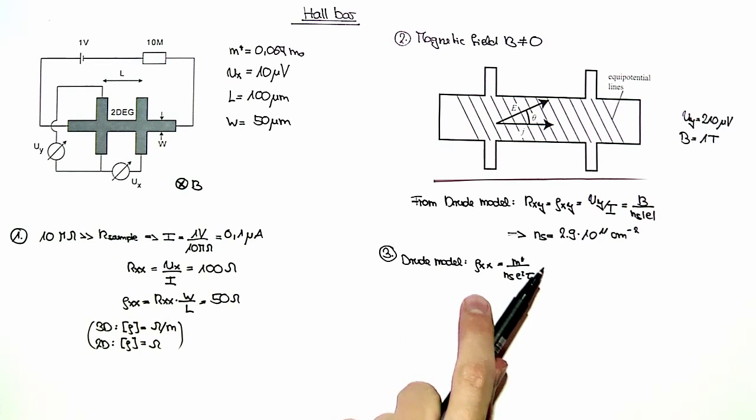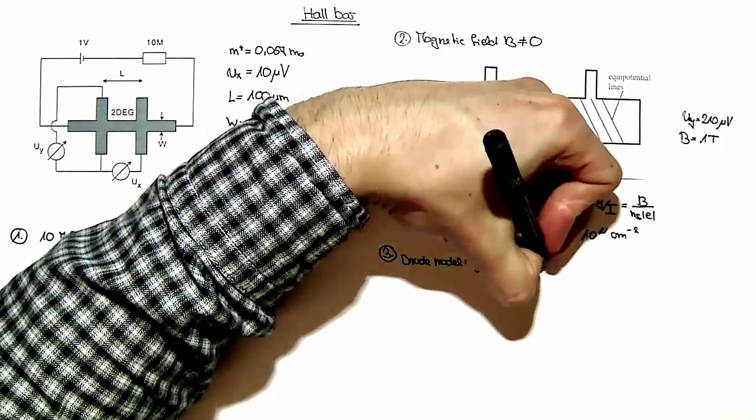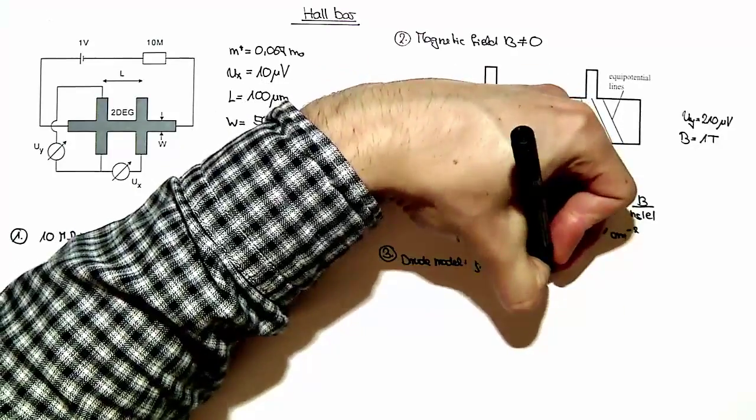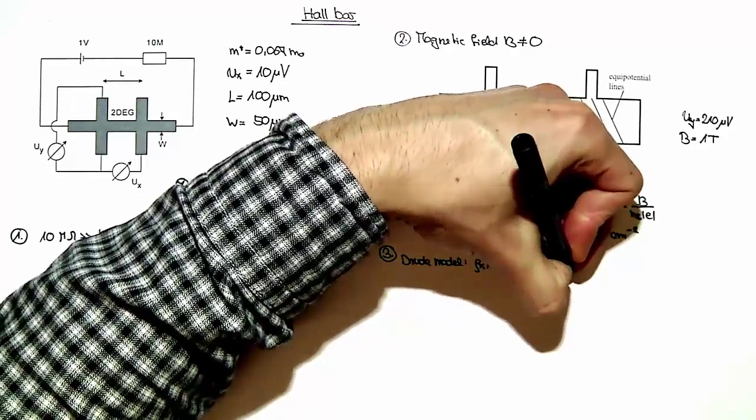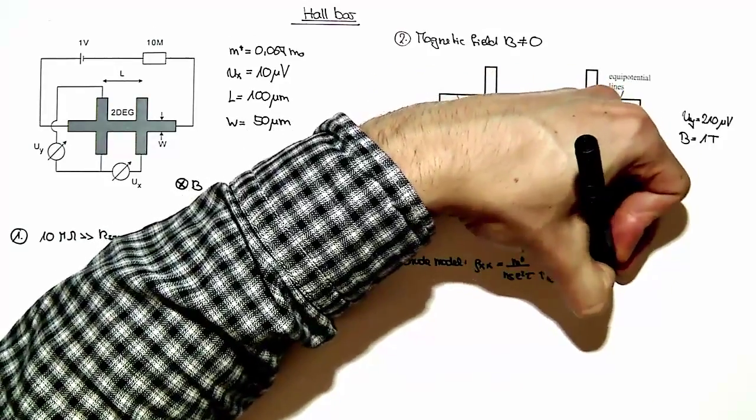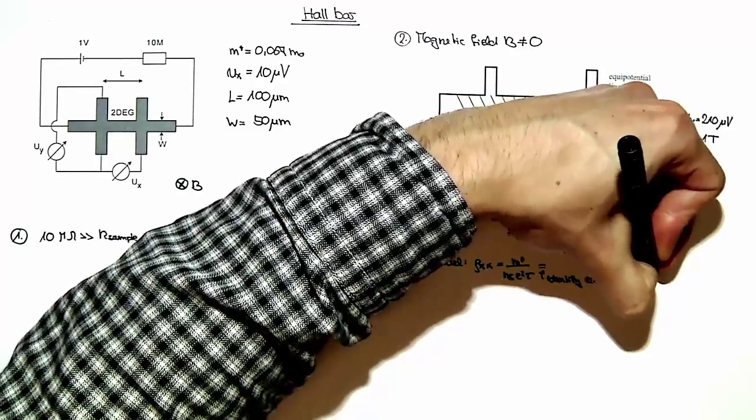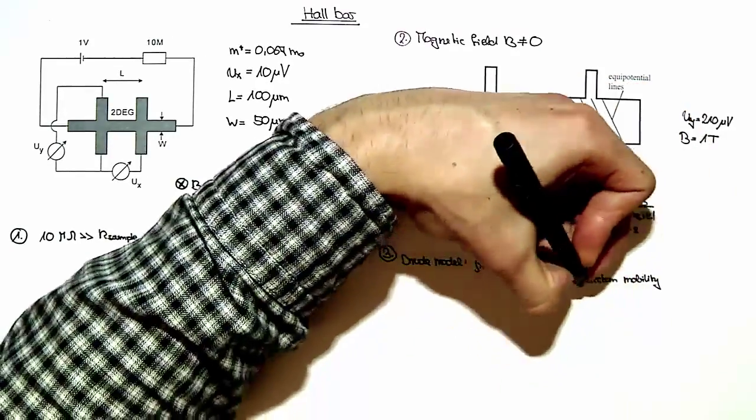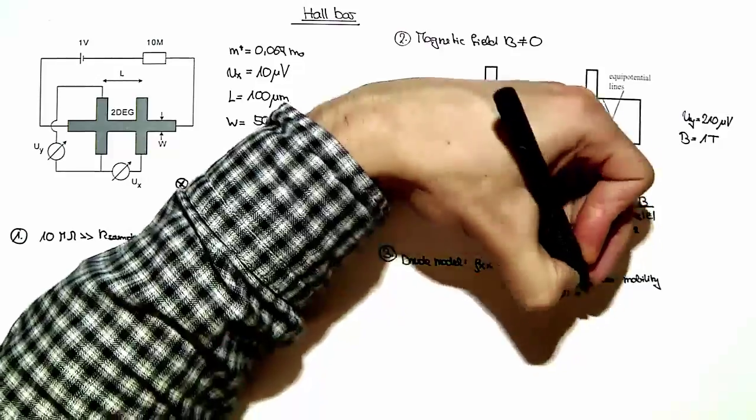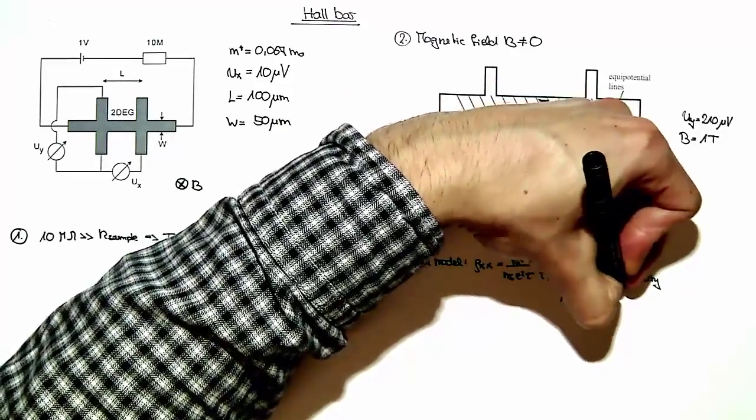It is given as this term here, where we can now identify the electron mobility, mu being E times tau over M star.